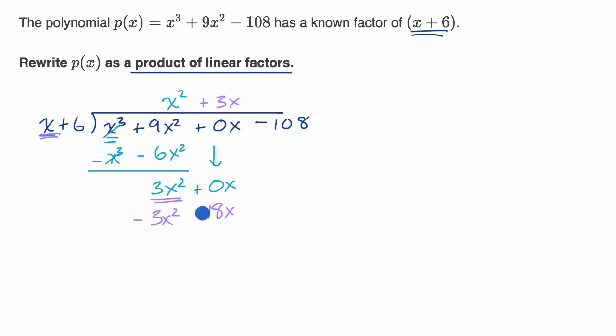3x times x is 3x². We want to subtract what we have in that, I guess that color is mauve, light purple, not sure. And so we get 3x² cancel out, and then 0x - 18x is -18x. So let's bring down that -108.